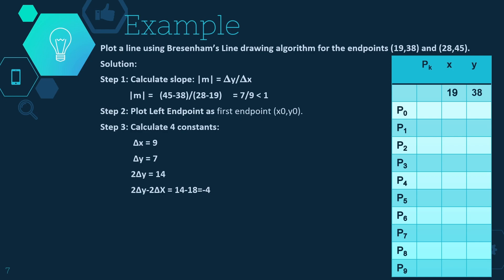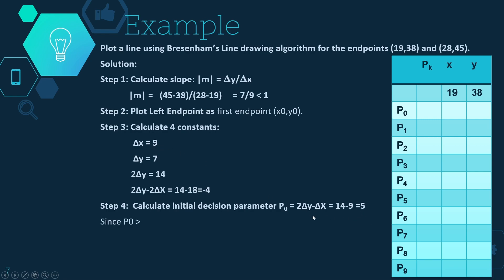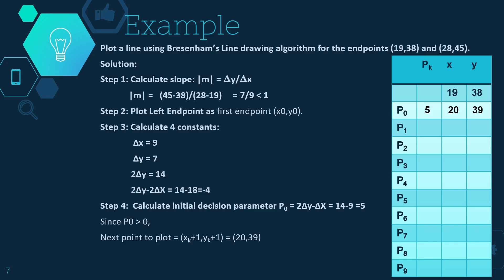Now we calculate the initial decision parameter p0 = 2 delta y minus delta x = 14 minus 9 = 5. Since p0 is greater than 0, we check the condition: we increment both x and y coordinates by 1. So the next point to plot is 19+1 = 20 for x and 38+1 = 39 for y, giving the point (20, 39).